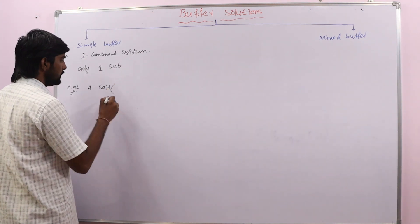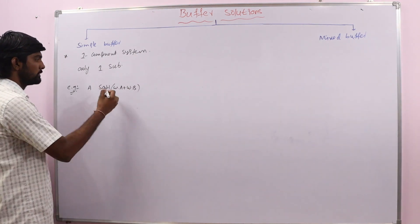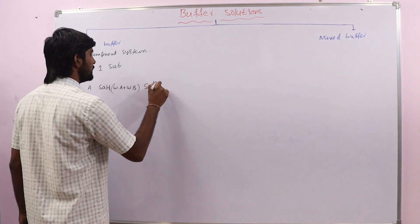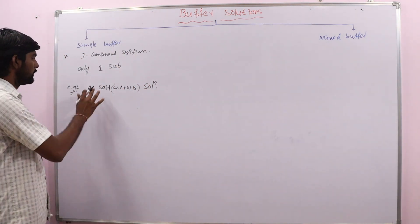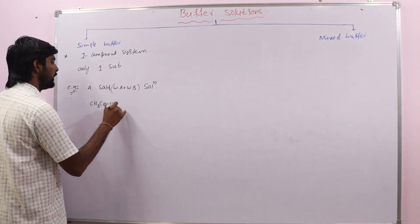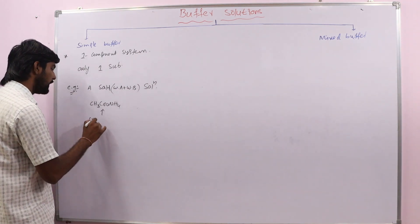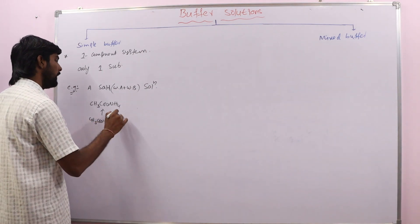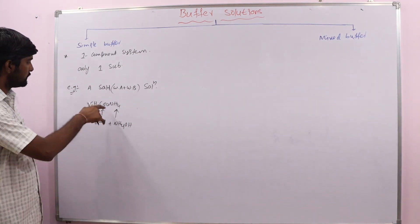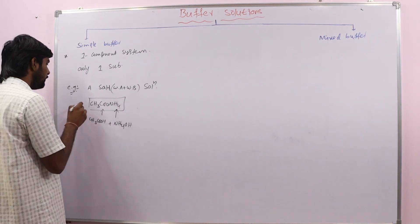A salt formed from a weak acid plus a weak base acts as a simple buffer solution. For example, CH3COONH4 (ammonium acetate) is formed from the weak acid CH3COOH plus the weak base NH4OH, and this solution acts as a simple buffer solution.